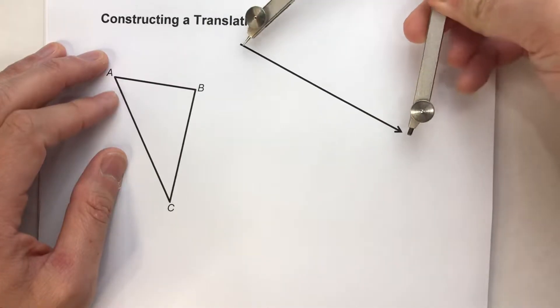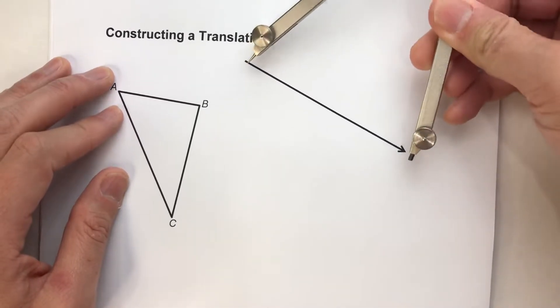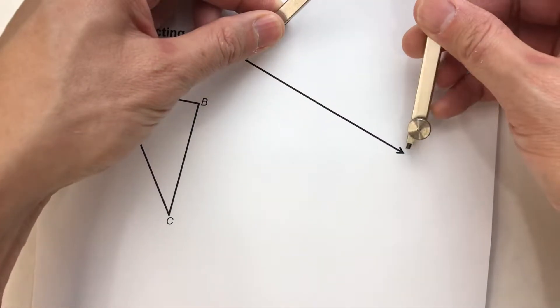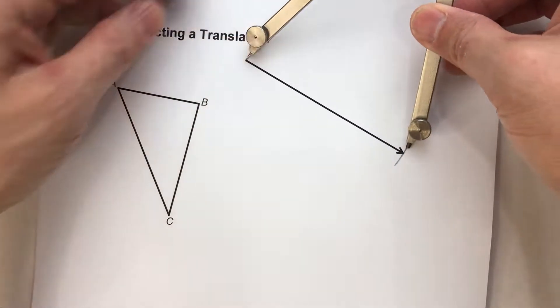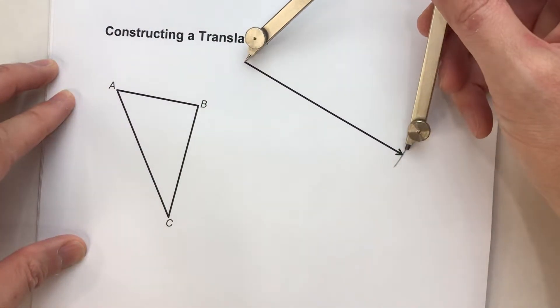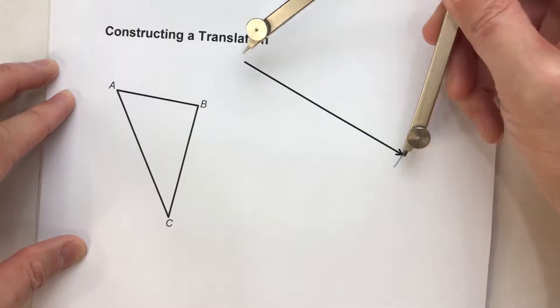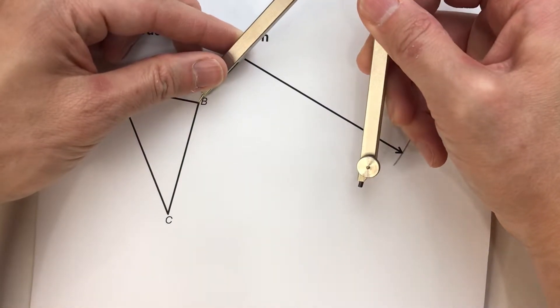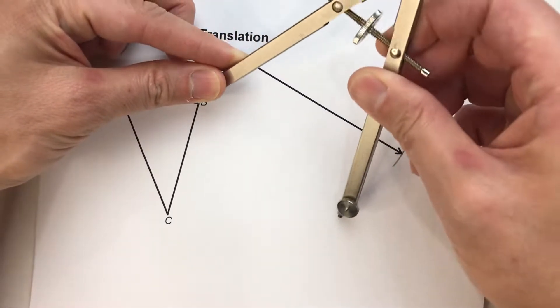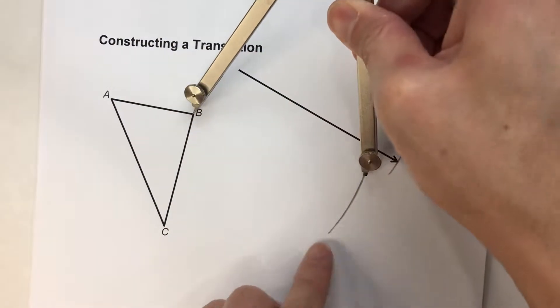First things first, I have my compass here, and I have it set to the length of the vector. There it is. So I know every single point is going to slide this far. So off of each vertex, here's B. I know B prime is going to end up somewhere along this arc.